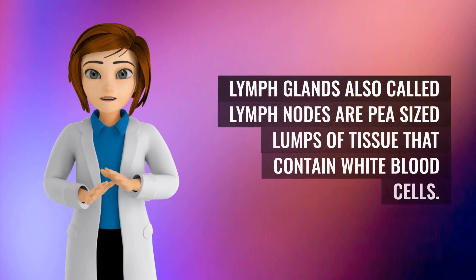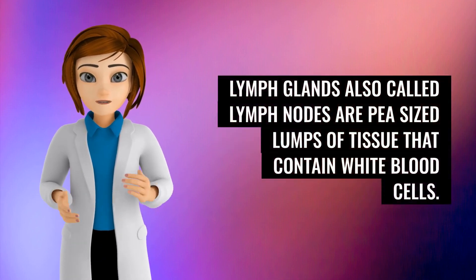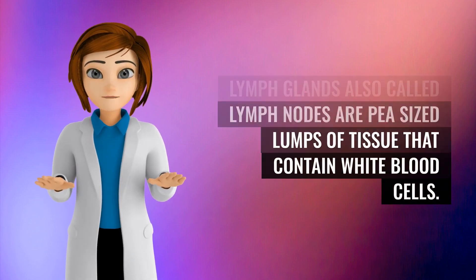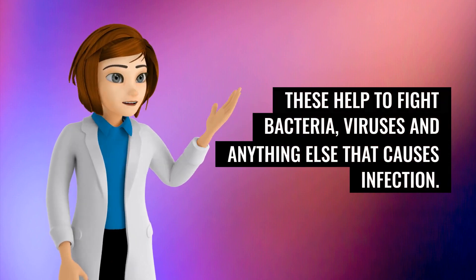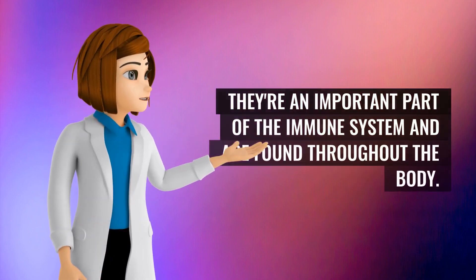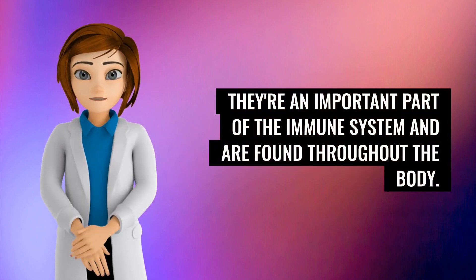Lymph glands, also called lymph nodes, are pea-sized lumps of tissue that contain white blood cells. These help to fight bacteria, viruses and anything else that causes infection. They're an important part of the immune system and are found throughout the body.